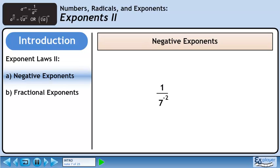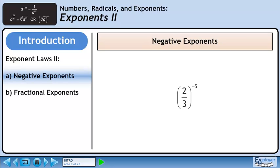This fraction has a power with a negative exponent in the denominator. If we bring the power to the numerator, we can make the exponent positive. Now we have a fraction raised to a negative exponent. If we flip the fraction, we can change the sign of the exponent.